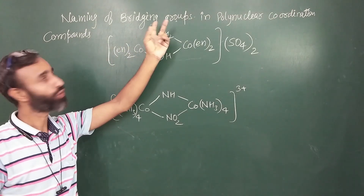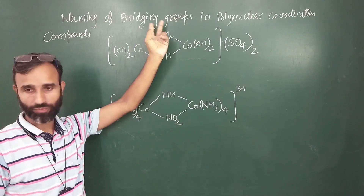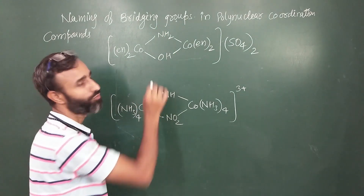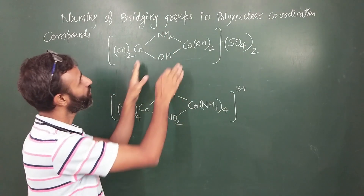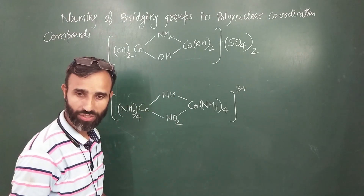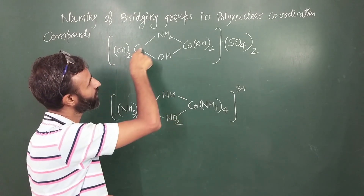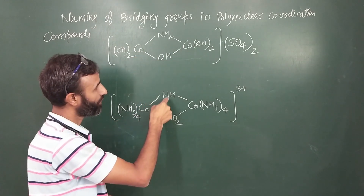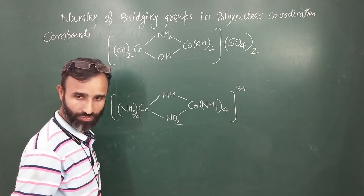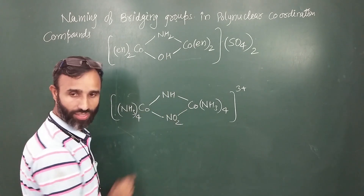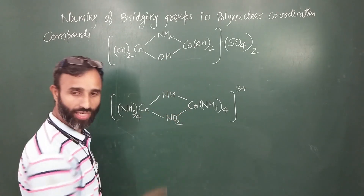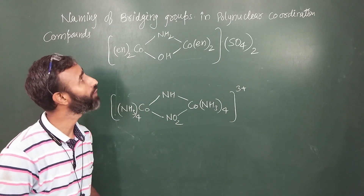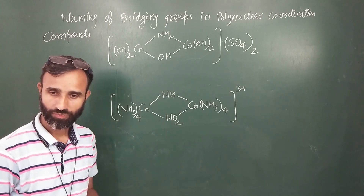Bridging filter — the naming of bridging groups. Bridging groups are acid groups which are attached to two metals simultaneously. Like this: NH2 is attached to this CO as well as this one. Similarly, OH is attached, NH2 is attached — so these are all bridging groups and bridging ligands.